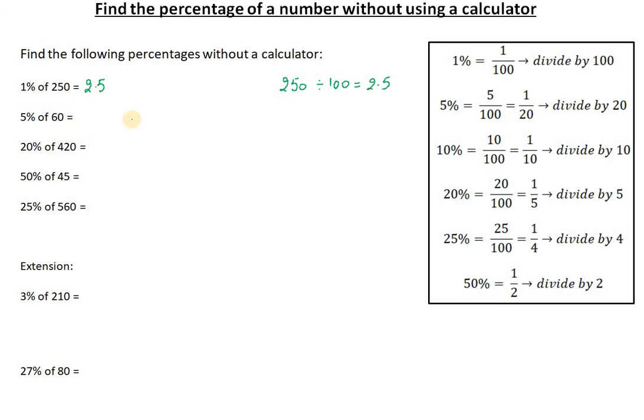5% of 60 - 5% means that we just need to divide by 20, so 60 divided by 20, that's 3. So 5% of 60 is actually 3.